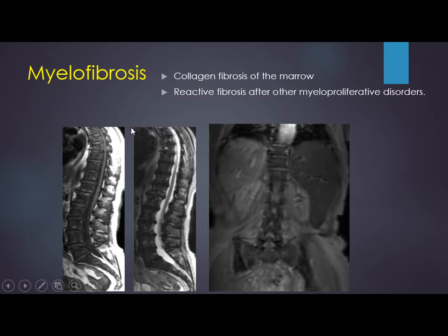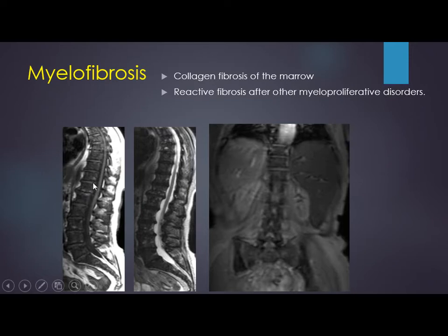Myelofibrosis means collagen fibrosis of the marrow. It can be primary or reactive fibrosis after other myeloproliferative disorders — there may be multiple myeloma with myelofibrosis, or leukemia with myelofibrosis. On T1 the signal is lower than the disc, so this is pathological. On coronal there is again low signal. We also see huge splenomegaly, which usually occurs in patients with myelofibrosis.